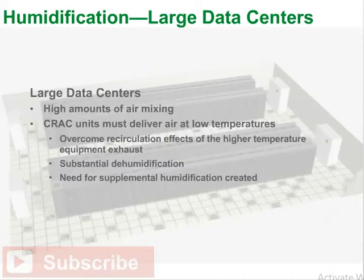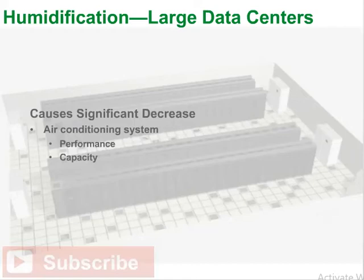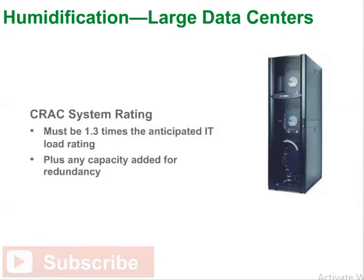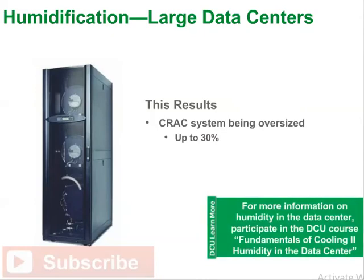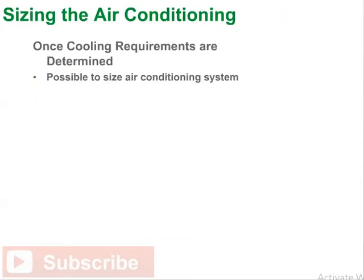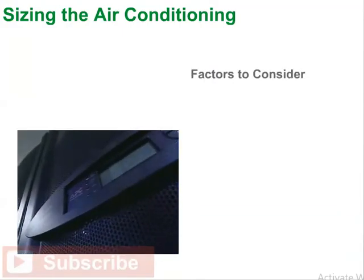For large data centers with high amounts of air mixing, the CRAC unit must deliver air at low temperatures to overcome recirculation effects, resulting in substantial dehumidification and the need for supplemental humidification. This causes a significant decrease in performance. The CRAC system rating must be 1.3 times the anticipated IT load rating plus any capacity added for redundancy. Once the cooling requirements are determined, it is possible to size an air conditioning system.